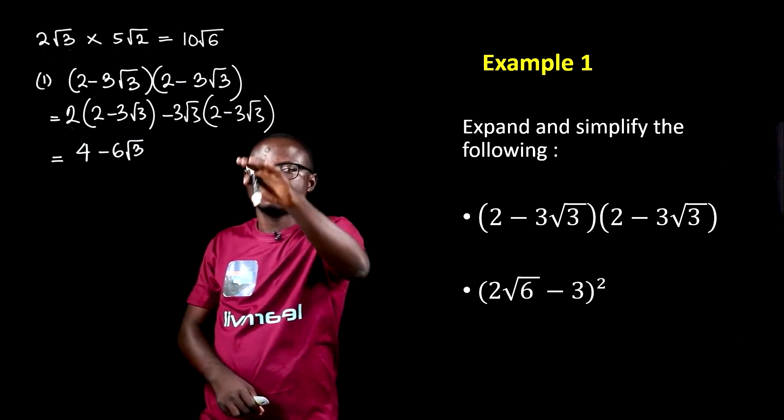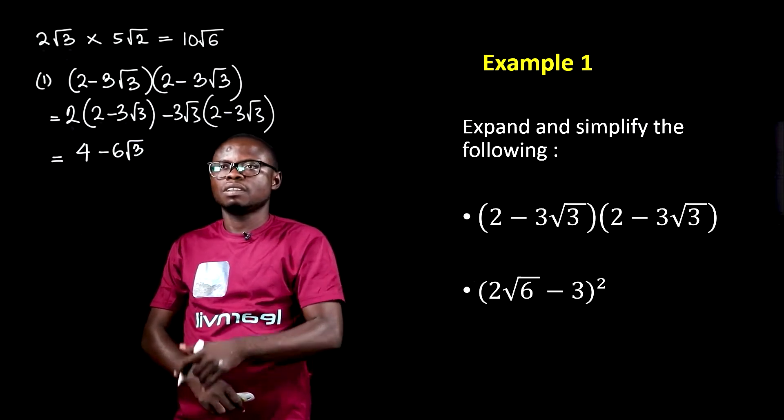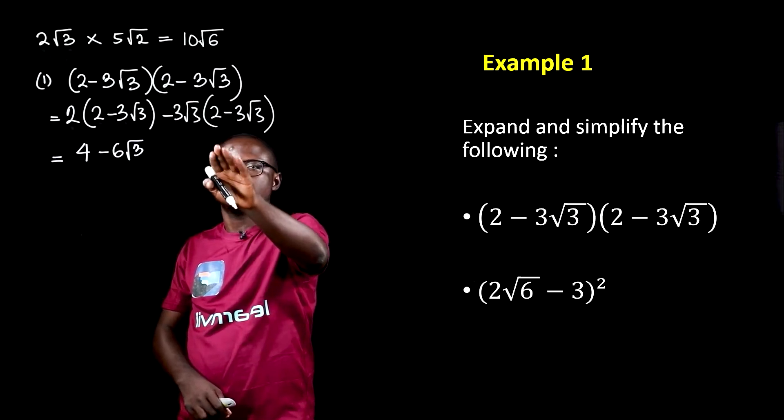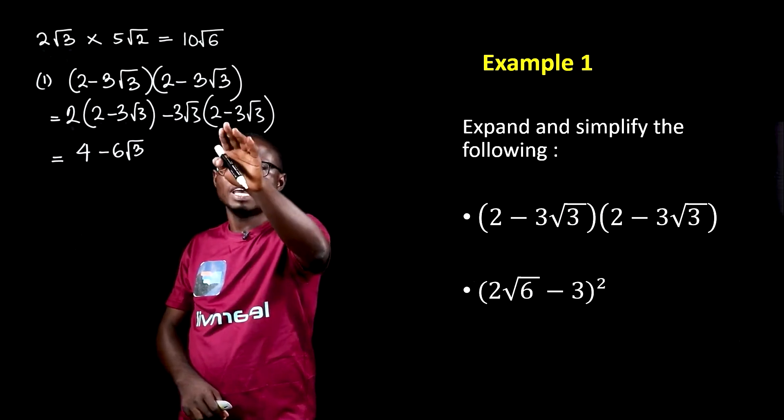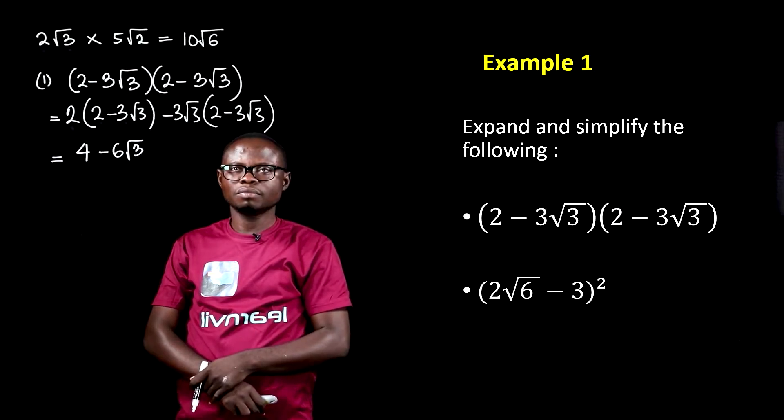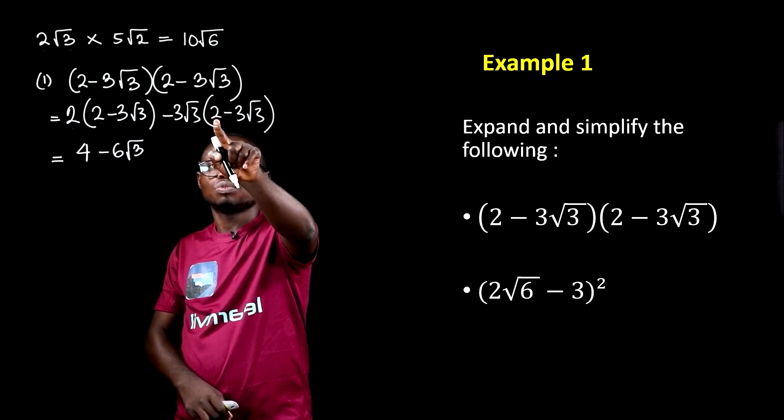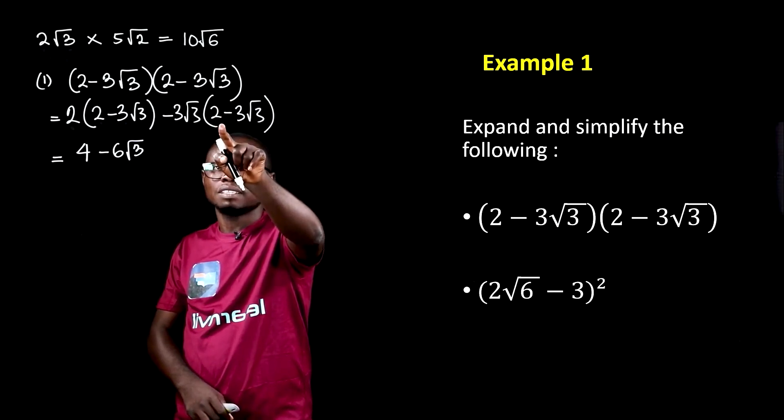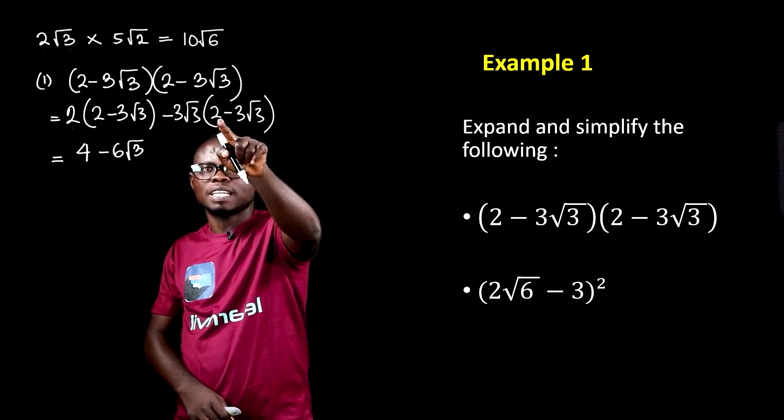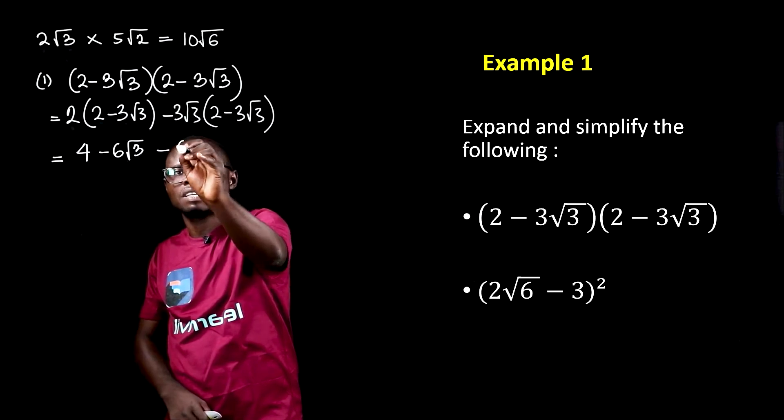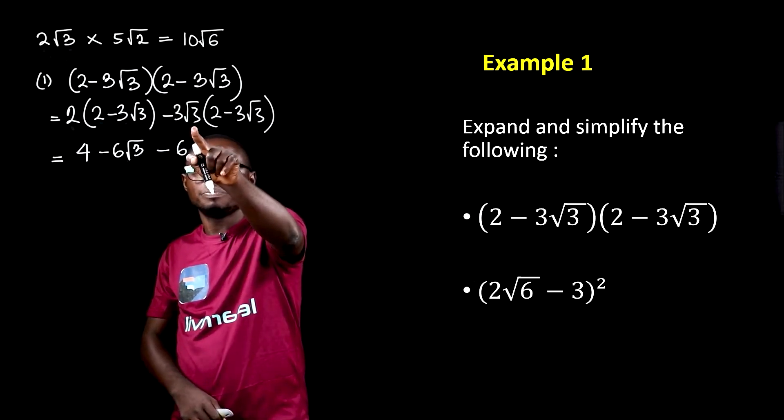Now, we're going to expand this particular part. We have minus 3 root 3 multiplying 2 and minus 3 root 3. In this case, the minus 3 root 3 multiplies the 2, and this 2 has no inside, so the outside here will multiply the outside and that gives us minus 6, and then we bring this inside.